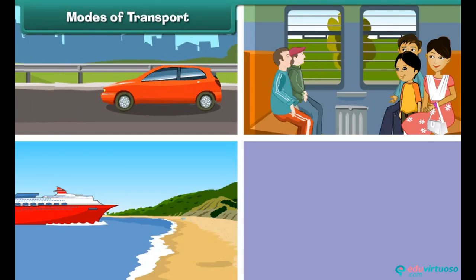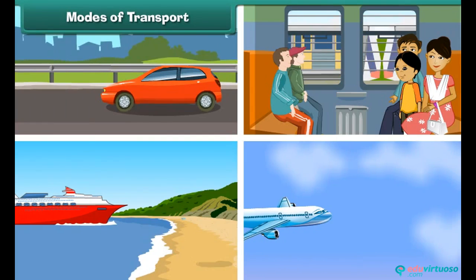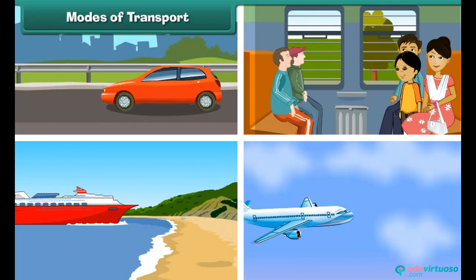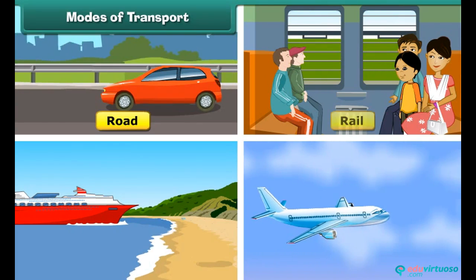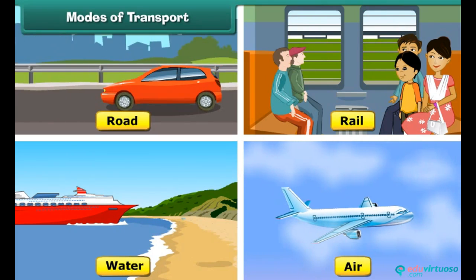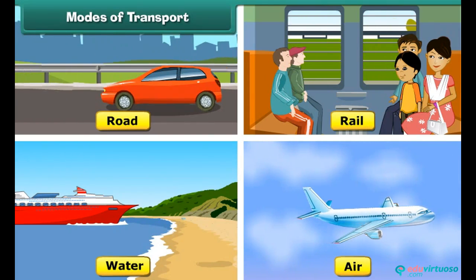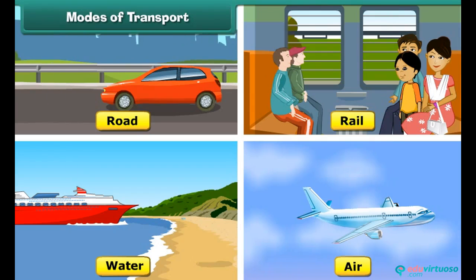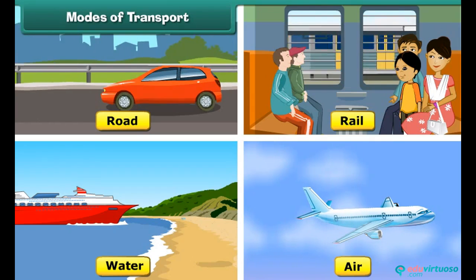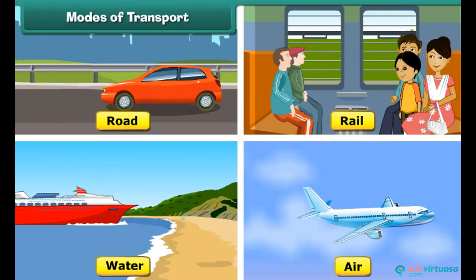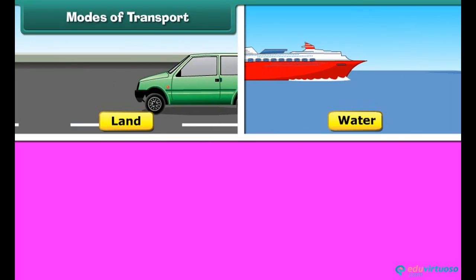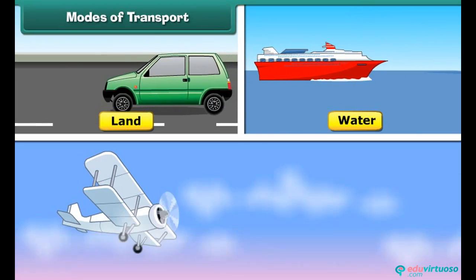Goods, animals, and people can be transported by road, rail, water, or air. Different mediums used for transportation are known as the modes of transport. Modes of transport can be broadly divided into three categories: land transport, water transport, and air transport.